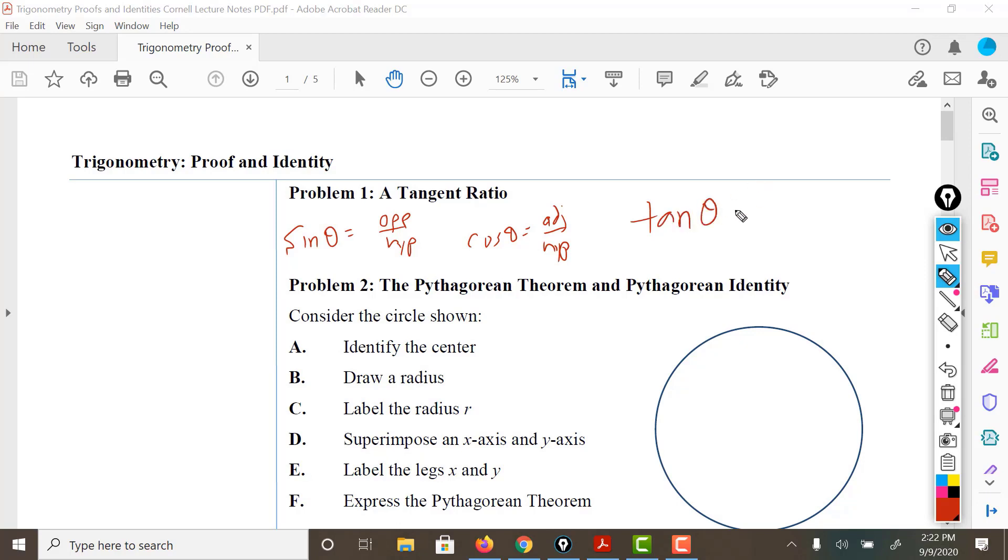Tangent of theta, we're going to make the claim that tangent of theta is sine of theta over cosine of theta. Why? Well, look what happens. If I were to go ahead and take sine of theta and put them over each other, we have this and this. These cancel out,